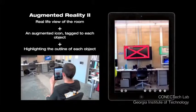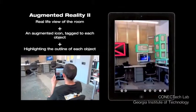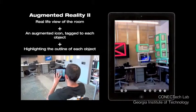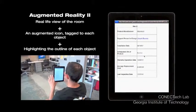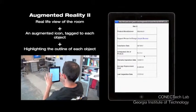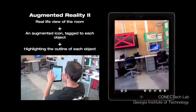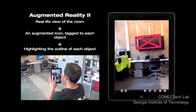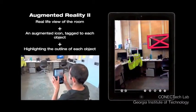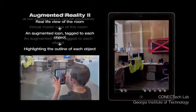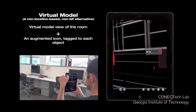In Augmented Reality 2, the same Augmented Reality option was provided, but highlights of each of the objects were also provided to enhance the visibility of the objects to the user.